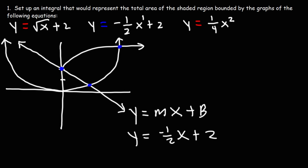The first point of intersection — we know the x value is zero. We need to find the other two. What we're going to do is break this into two regions: the left side we'll call area one, and the right side area two. But first, let's find the points of intersection.